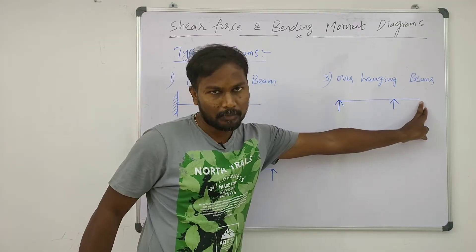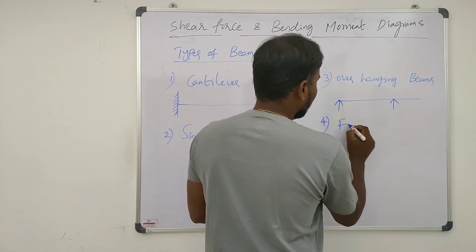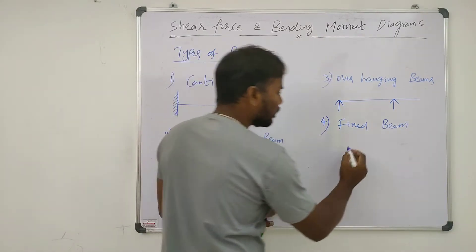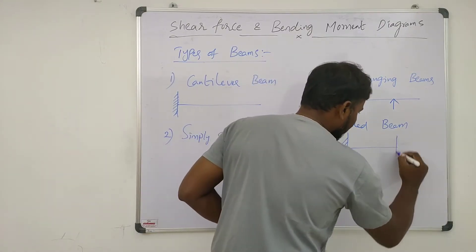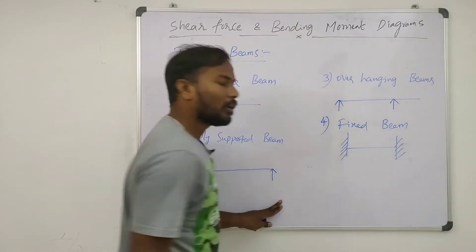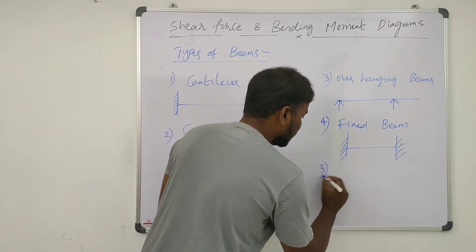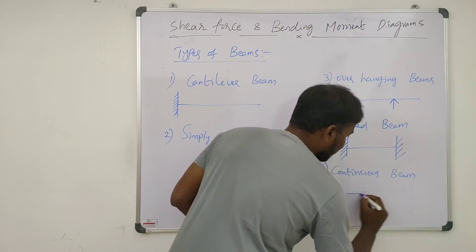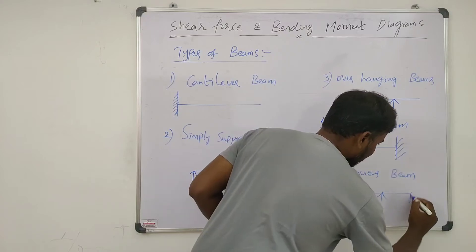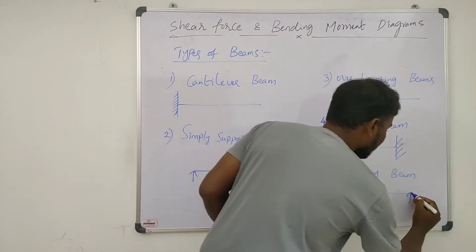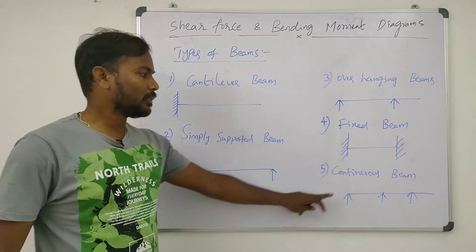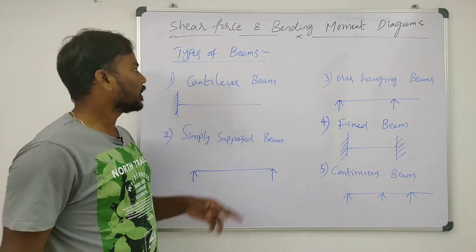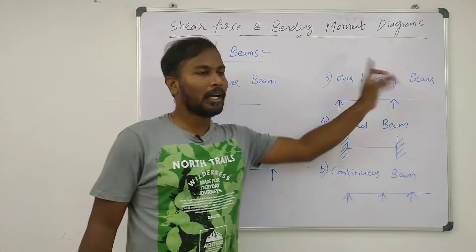Fourth one is fixed beam — the name indicates it has both ends fixed. And last one is continuous beam, which has more than two supports and may extend over as well. These are the five types of beams. Majorly we will discuss cantilever beam, simply supported beam, and overhanging beam.